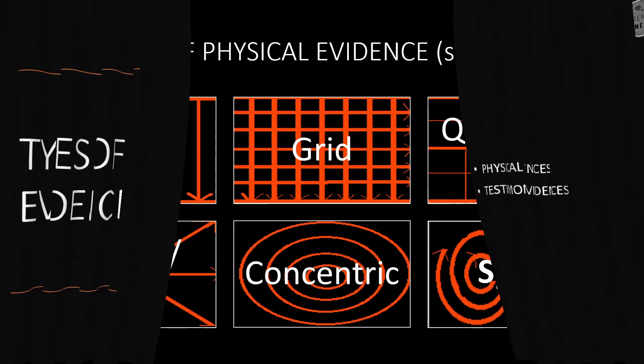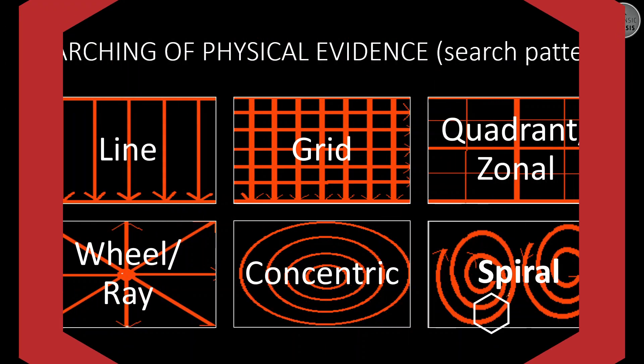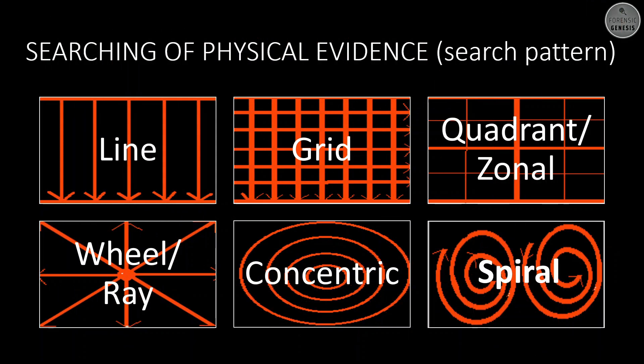Let's talk about the physical evidences now, because that's the part we as forensic scientists have to work on. Anything can be a physical evidence, ranging from microscopic pollens to as big as a rifle. We at the crime scene can only collect things we suspect, and analysis can only prove whether it is evidence or not. There are some search patterns we rely on based on the area and manpower available: line pattern, grid pattern, quadrant or zonal pattern, wheel or ray method, concentric pattern, and spiral pattern.